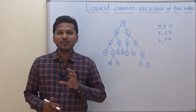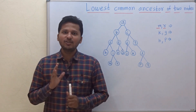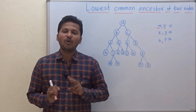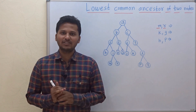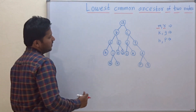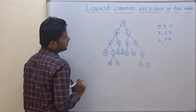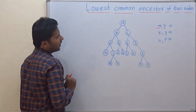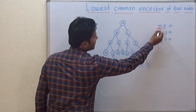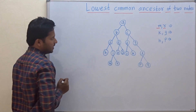Hello friends, today we are going to see how to find the lowest common ancestor of two nodes in a binary tree. Let's see the example. This is the binary tree and we want to find out the lowest common ancestor of nodes M and R, for example.